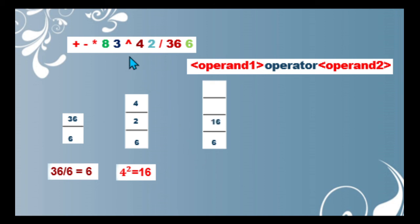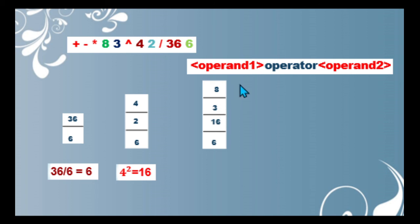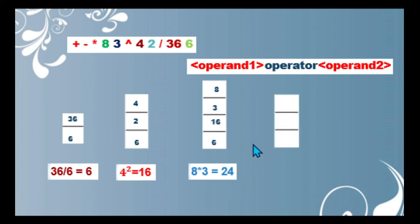We continue scanning. We have 3 — an operand, push it on the stack. Then 8 — also an operand, push it on the stack. Then multiplication operator — this is an operator, so we pop out the last two elements: 8 is operand 1 and 3 is operand 2. We perform multiplication: 8 multiplied by 3 equals 24. Our stack contains 6 and 16. We push the obtained value 24 onto the stack.